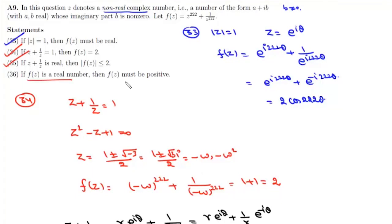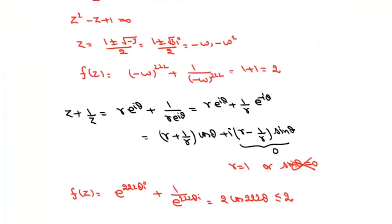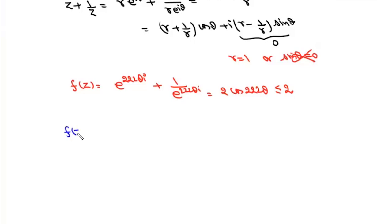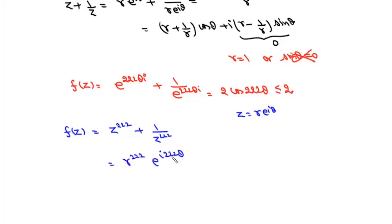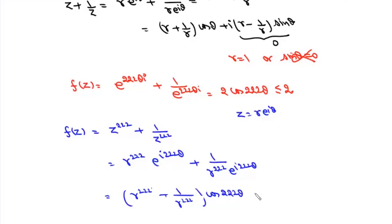Statement 36 says: if f(z) is real, then f(z) must be positive. Writing f(z) = z^222 + 1/z^222 with z = r·e^(iθ), we get f(z) = r^222·e^(i·222θ) + (1/r^222)·e^(-i·222θ), which expands to (r^222 + 1/r^222)cos(222θ) + i(r^222 - 1/r^222)sin(222θ).